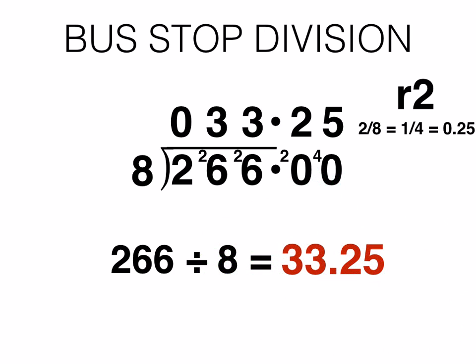If we go back to the remainder of 2 and write this as a fraction, that would be 2 out of 8, which is the same as 1 quarter, which is the same as 0.25. So that is how 33 remainder 2 is the same as 33.25. And that is the end of how to write the answers from bus stop division — the remainders — as decimal fractions.